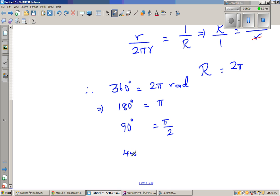45 degree is π by 4. So this is what I generally remember. 180 degree is π. If you know this, you can find, you can change any degrees into radians. So this is 90 is half of 180.